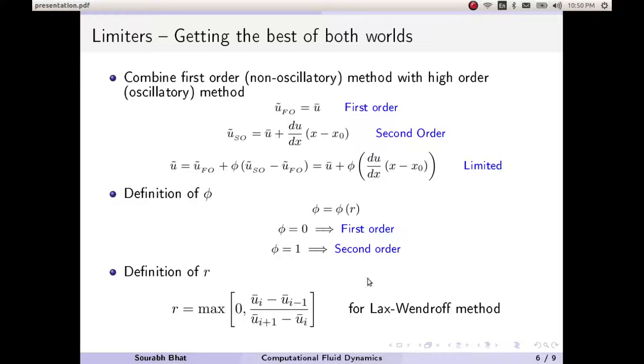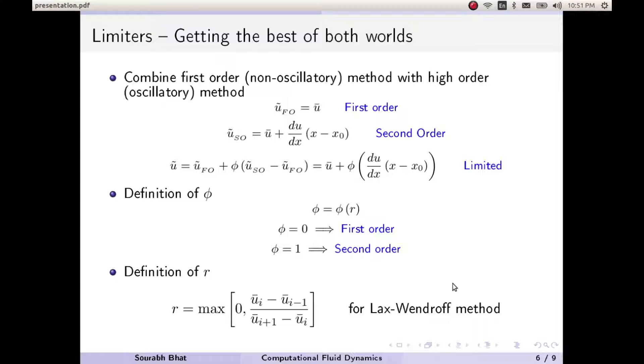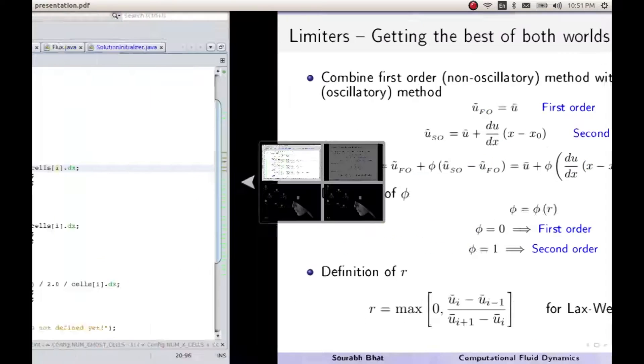To apply limiters, we need to use expressions from last time. We will use this for reconstruction, then this equation for calculating value r, then using r to calculate phi. Since we're using the Van Albada limiter, we'll use this expression. Let's begin by calculating r based on surrounding values.